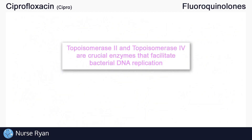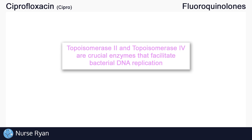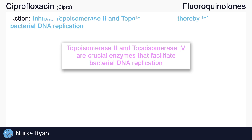Topoisomerase 2 and topoisomerase 4 are crucial enzymes that facilitate bacterial DNA replication. Fluoroquinolones work by inhibiting these two enzymes, thereby inhibiting bacterial DNA replication.